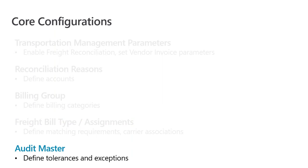Finally, we have our audit master, which is really at the heart of the auto-reconciliation process. It allows you to define the tolerances for overages and underages, and also any exceptions that may apply to certain billing groups versus the general tolerances. We will discuss each of those in more detail in the demo system with the Contoso data.